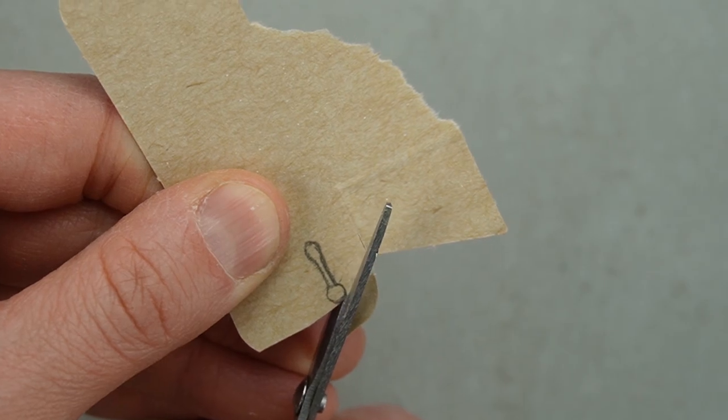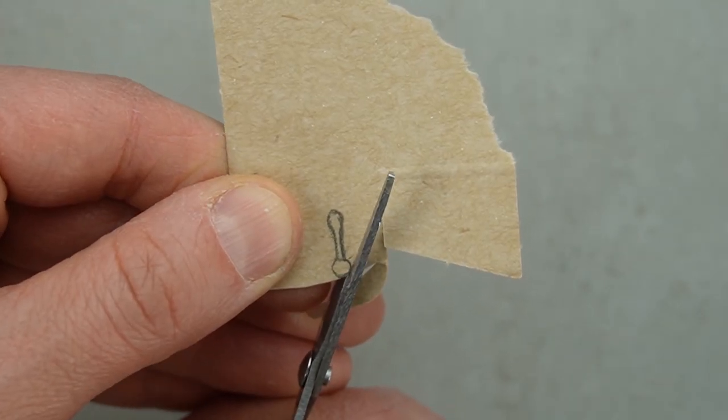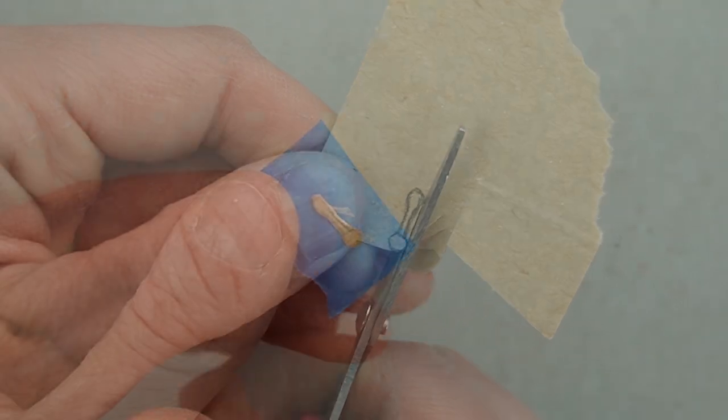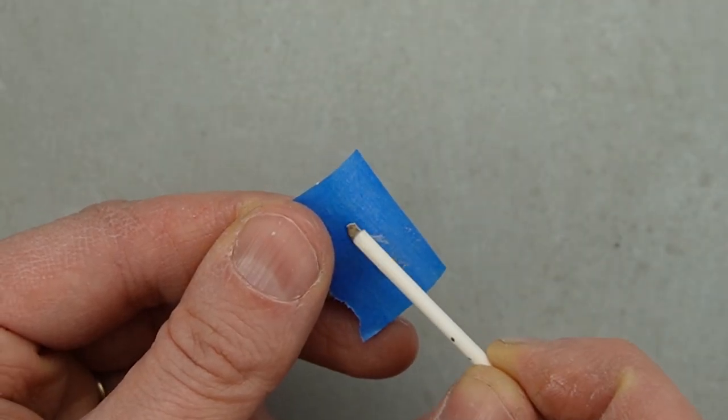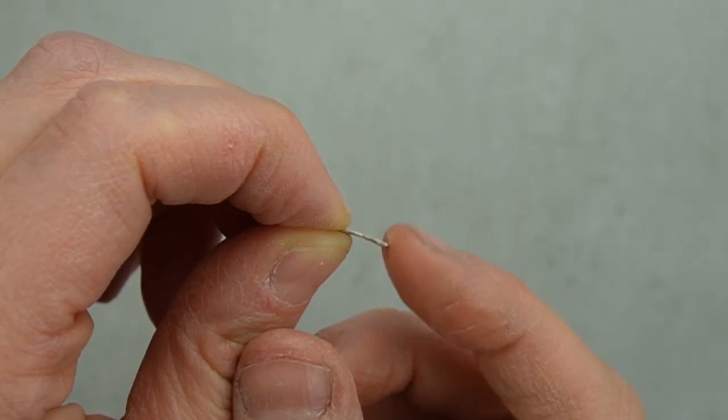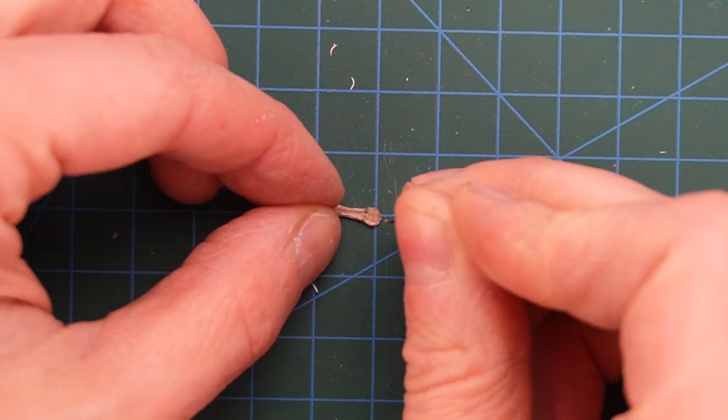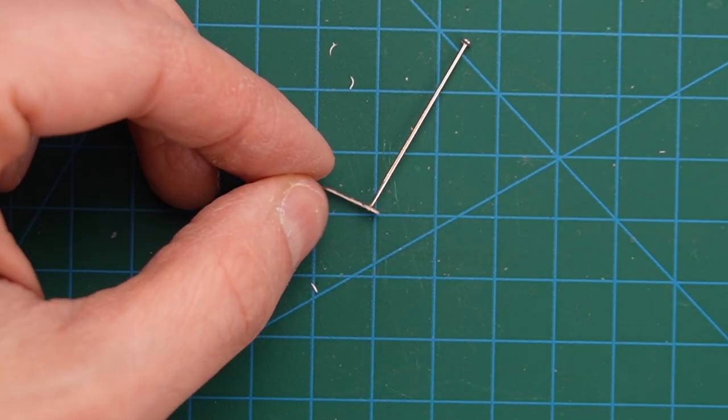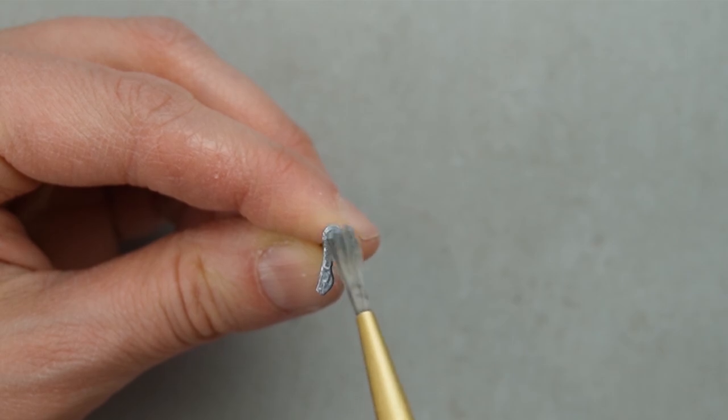To make the handle for the register, I traced a shape onto some more cereal box. This will be a working handle, so I'm adding some super glue to make it stronger. I stuck a sewing pin through one of the ends and painted the entire handle with a coat of grey paint covered with silver.